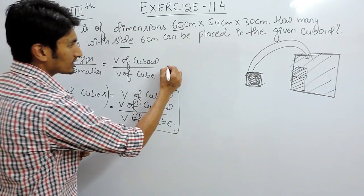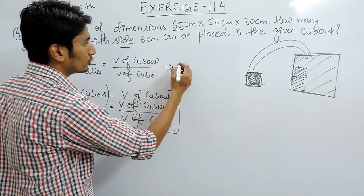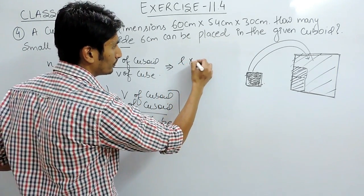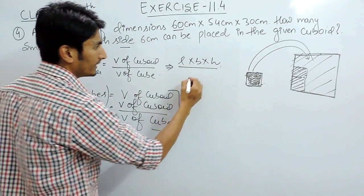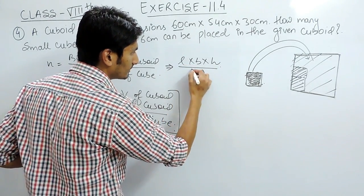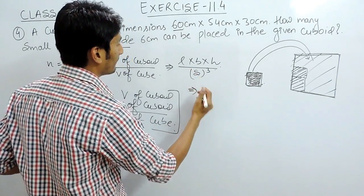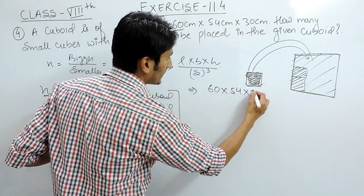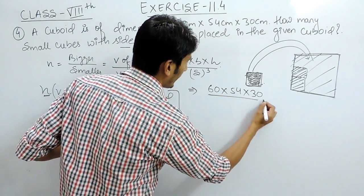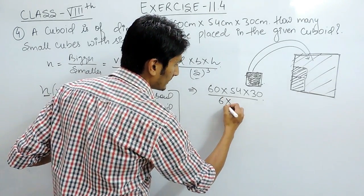Now you can just substitute the values and you will get your answer. The volume of cuboid is length × breadth × height, and the volume of cube is side³. So the dimensions are given as 60 × 54 × 30, and the side of the cube is 6 cm, so that should be 6 × 6 × 6.